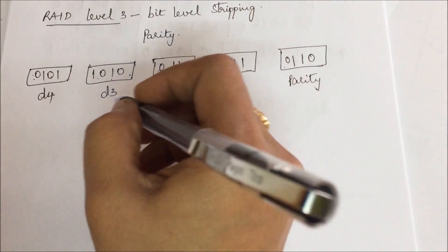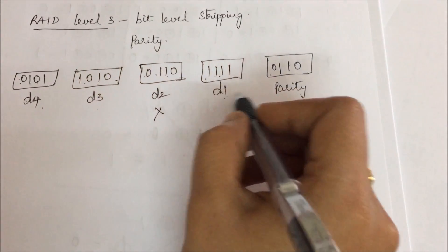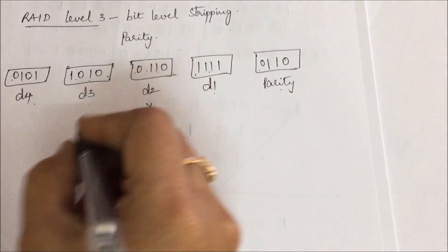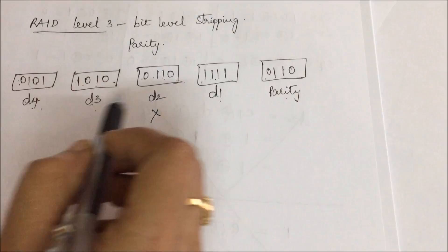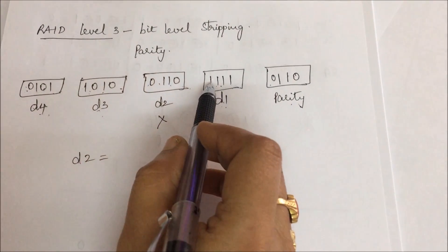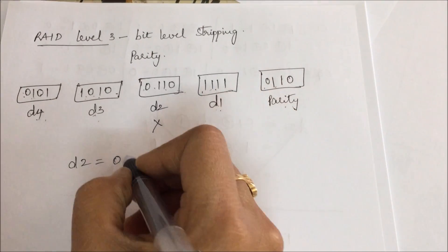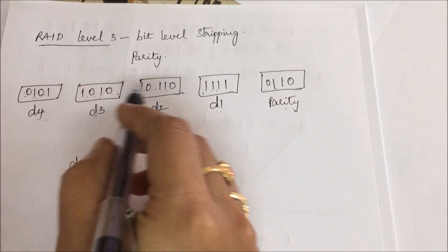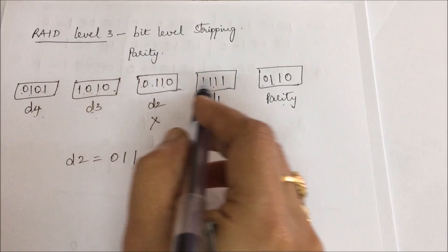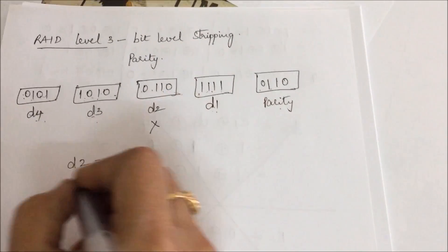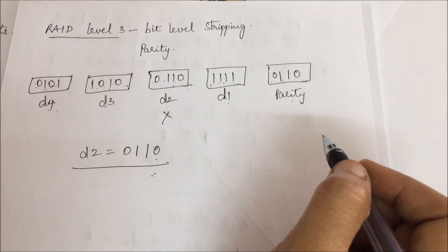Now let us say D2 disk is damaged or lost. We can recover D2 using D1, D3, D4 and the parity disk, maintaining even parity. For the first bit position: 0,1,1,0 — even number of 1s, so D2 bit = 0. For the second: 1,0,1 with parity 1 — three 1s total, odd, so D2 bit = 1. For the third: 0,1,1,1 — odd, so D2 bit = 1. For the fourth: 1,0,1,0 — so D2 bit = 0. D2 is recovered as 0110. This is how data recovery works in RAID level 3.